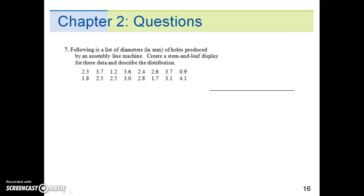Question number seven. The following is a list of diameters in millimeters of holes produced by an assembly line machine. Create a stem and leaf display for these data, and describe the distribution. First, try it on your own, then verify the results on the next slide.